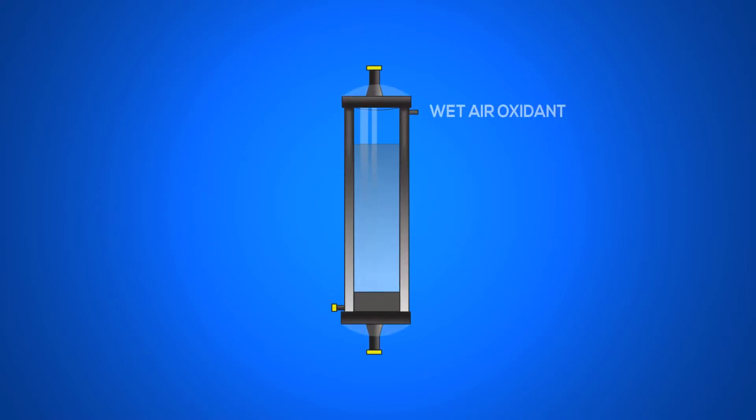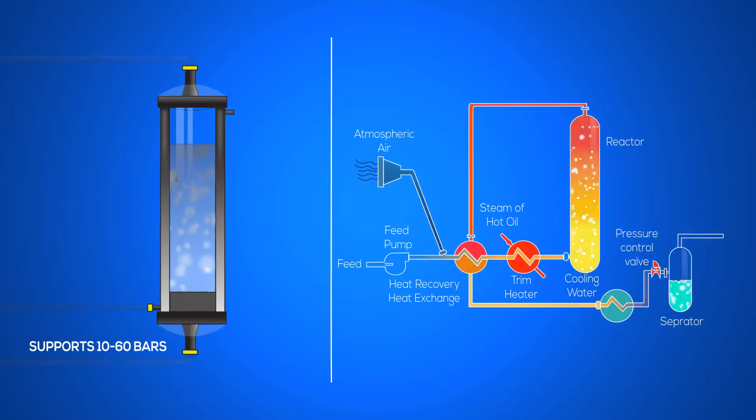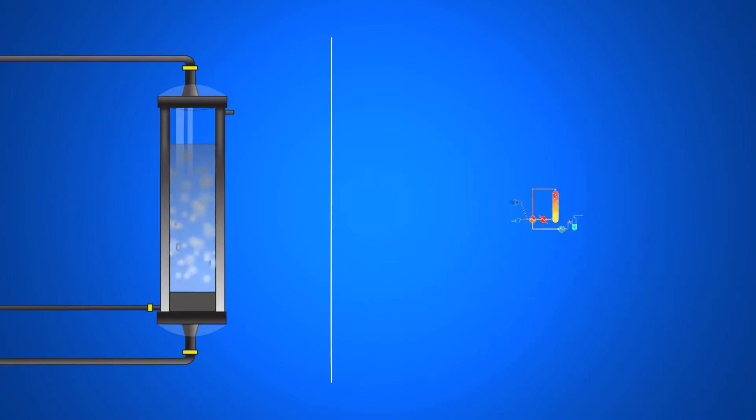Developed 60 years ago, wet air oxidation uses large bubble reactors that support low or medium pressure from 10 to 60 bar and uses air as oxidant to oxidize the contaminants within liquid waste streams. Retention time is often 90 minutes. These wet air oxidation systems were the first generation of wet oxidation.